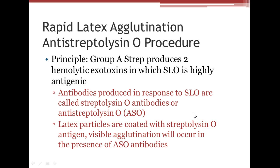Diagnostic testing for strep includes rapid latex agglutination and the anti-streptolysin O procedure. The quick ELISA immunoassay is done in the doctor's office. For the anti-streptolysin O test, we look for antibodies produced in response to streptolysin O — called streptolysin O antibodies — or we use latex particles coated with streptolysin O, where visible agglutination will occur in the presence of those antibodies.